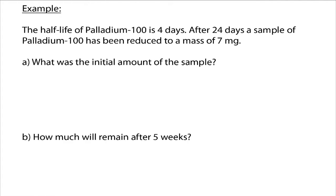Here's an example: the half-life of palladium-100 is four days. After 24 days, a sample of palladium-100 has been reduced to a mass of 7 milligrams. For part A, we want to know what the initial amount of the sample was. The first sentence — that the half-life is four days — lets us figure out our decay constant. Whatever we start with, we know we want half of that to be there after four days. So if A naught is the initial amount, then after four days, we want half that amount to remain.